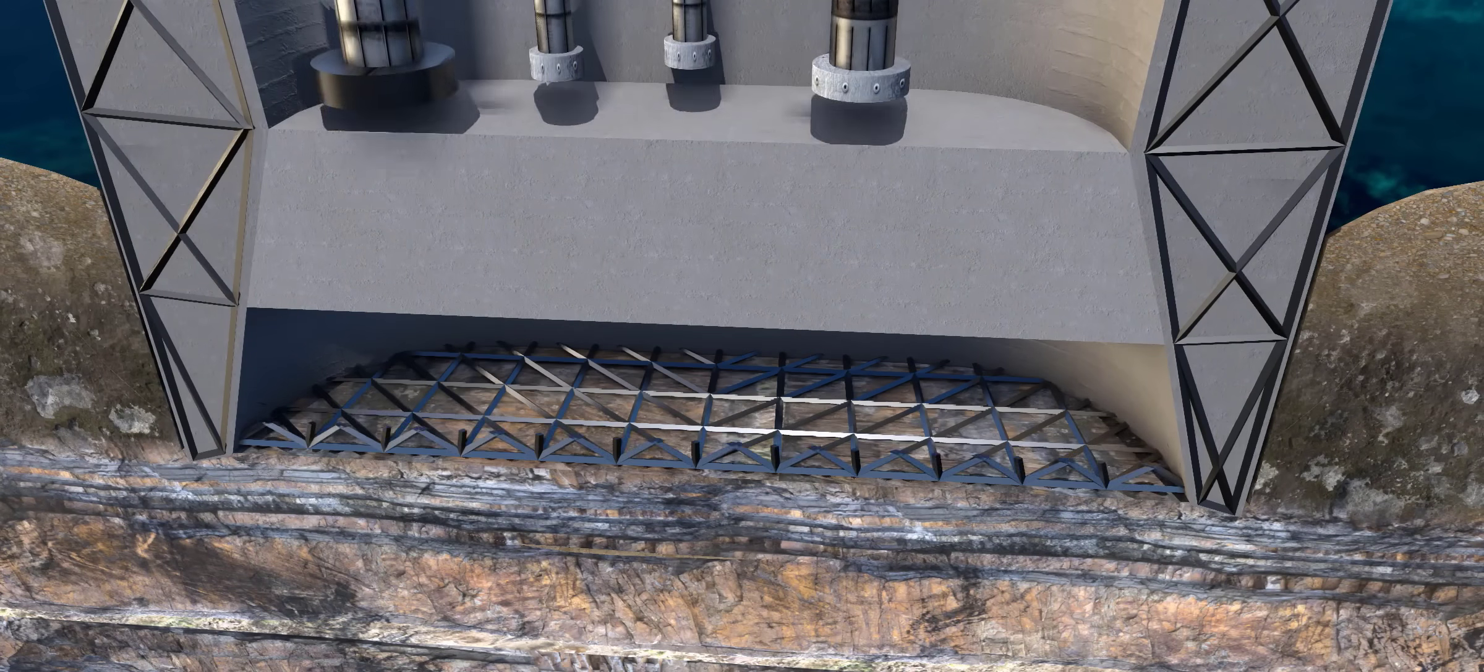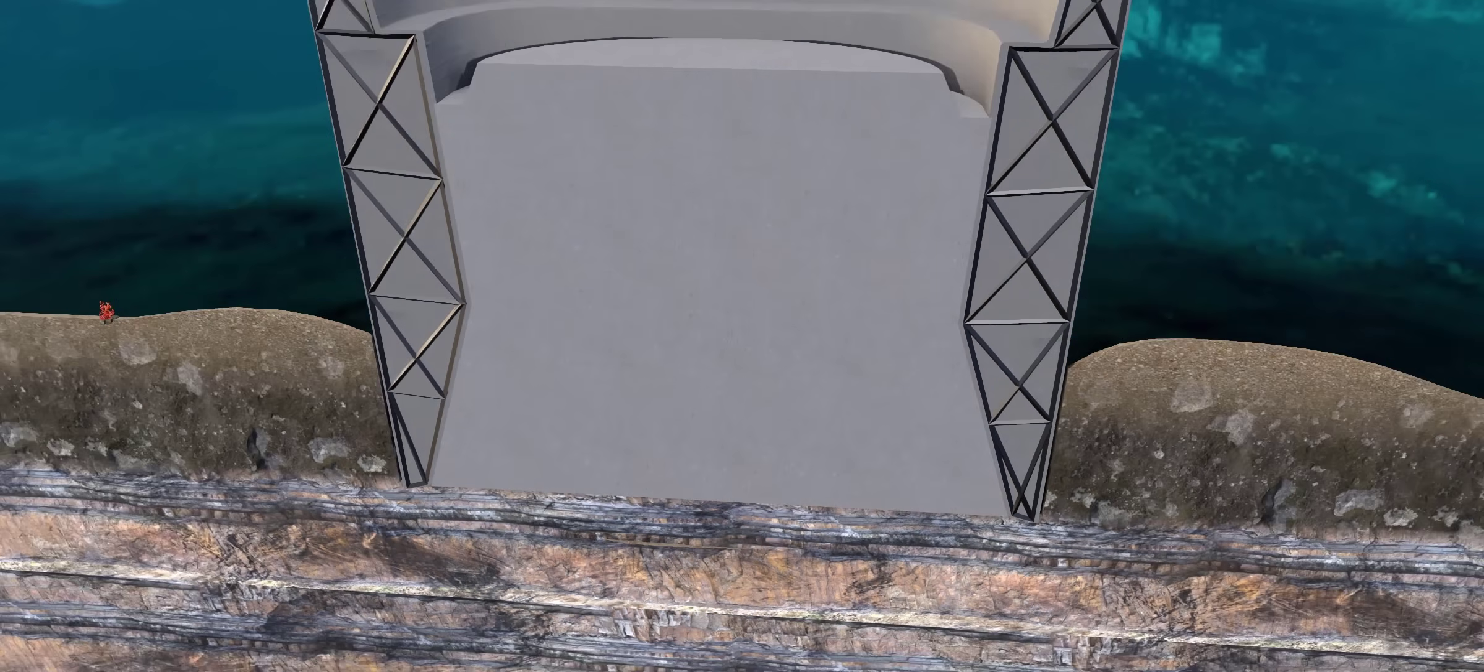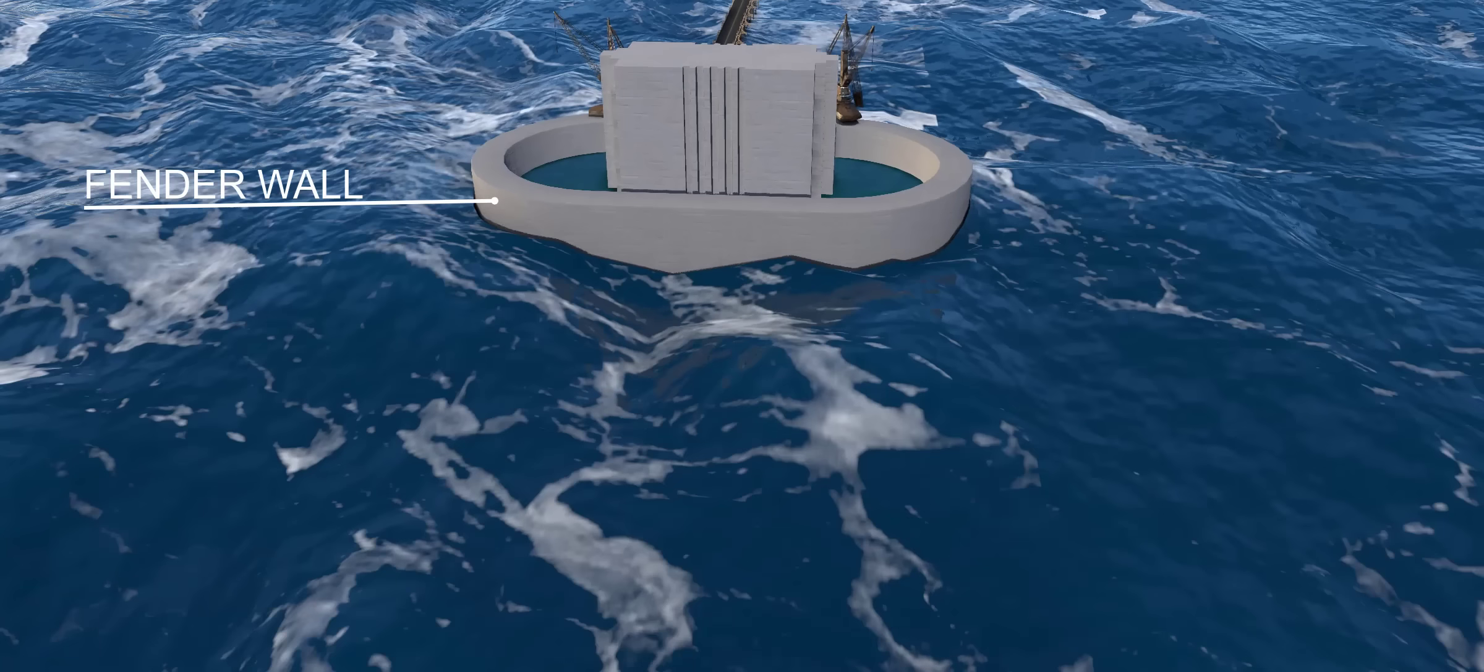After leveling the hard strata, they made a steel structure there and built an RCC foundation. The construction of the complete foundation is quite easy now. You can see how the fender walls protect the main foundation from the deadly waves.